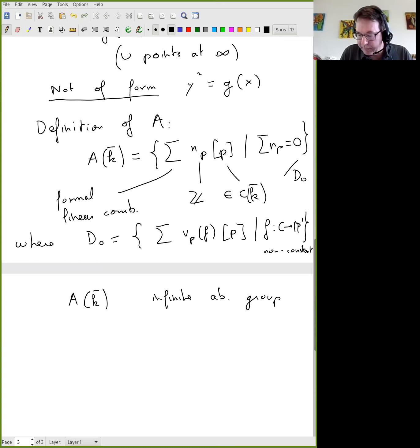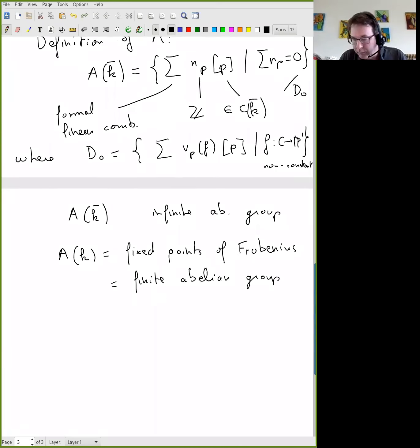Function on the curve with values, which potentially has poles. So F from C to P1 that's non-constant. So a standard fact which corresponds to things that arise also in complex geometry is that if you have a meromorphic function, it has as many poles as zeros with multiplicities. If you have a rational function, and this is the case here also, which means that the sum of the valuations is zero. So the subgroup D_zero is really a subgroup of A of K bar. And then we have a quotient. So this is an infinite abelian group. And to obtain A of K, which is the group we really are interested in in the finite case, is just going to be the fixed points of the Frobenius action.